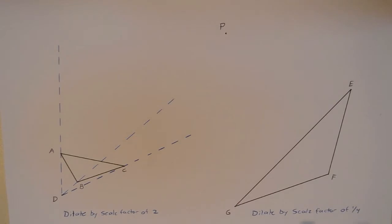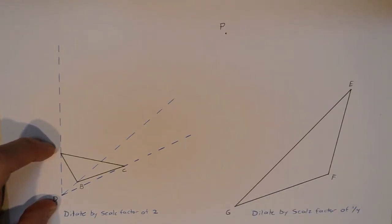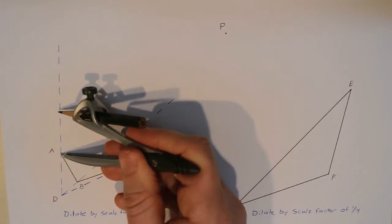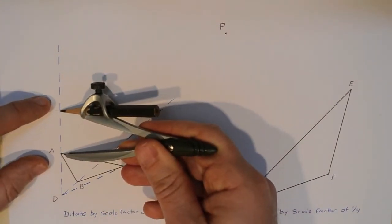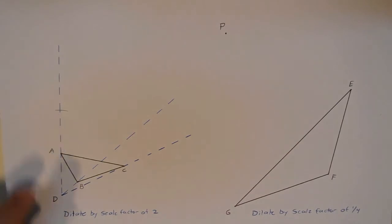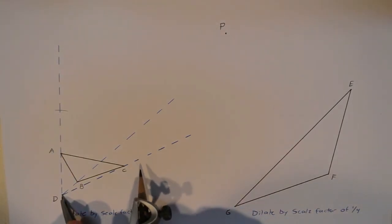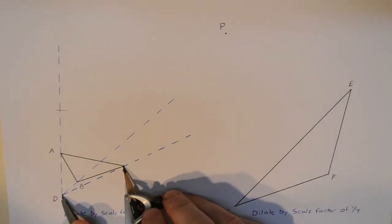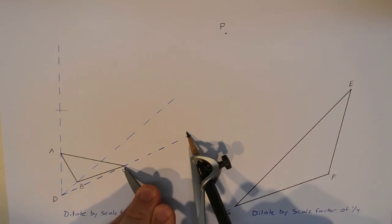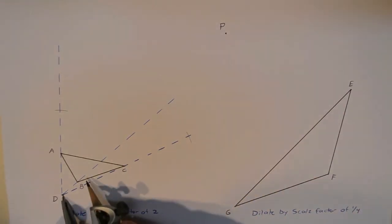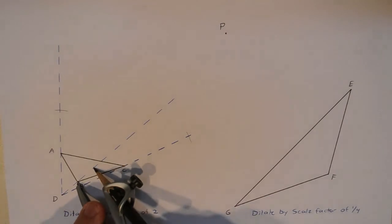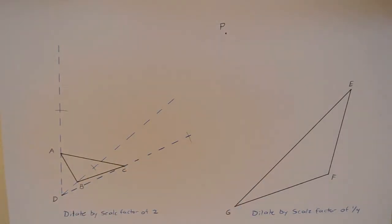To locate where the points are: if the distance from D to A has to double under a scale factor of 2, I simply take my compass, measure the distance from D to A, place the compass on A, and make a mark. That duplicates the distance from A to A prime. I do the same thing from D to C - place the compass on D, open it to C, then bring the compass to C and put a little arc. Same for D to B.